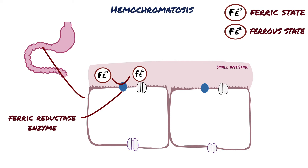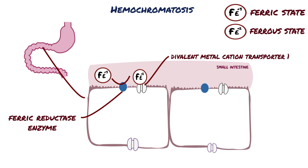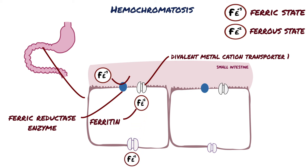Once ferric iron is reduced to ferrous iron in the intestinal lumen, a protein on the apical membrane of enterocytes called divalent metal-cation transporter 1 transports iron across the apical membrane and into the cell. Once inside the enterocyte, iron can be stored as ferritin or transported through the basolateral membrane and into circulation bound to ferroportin.